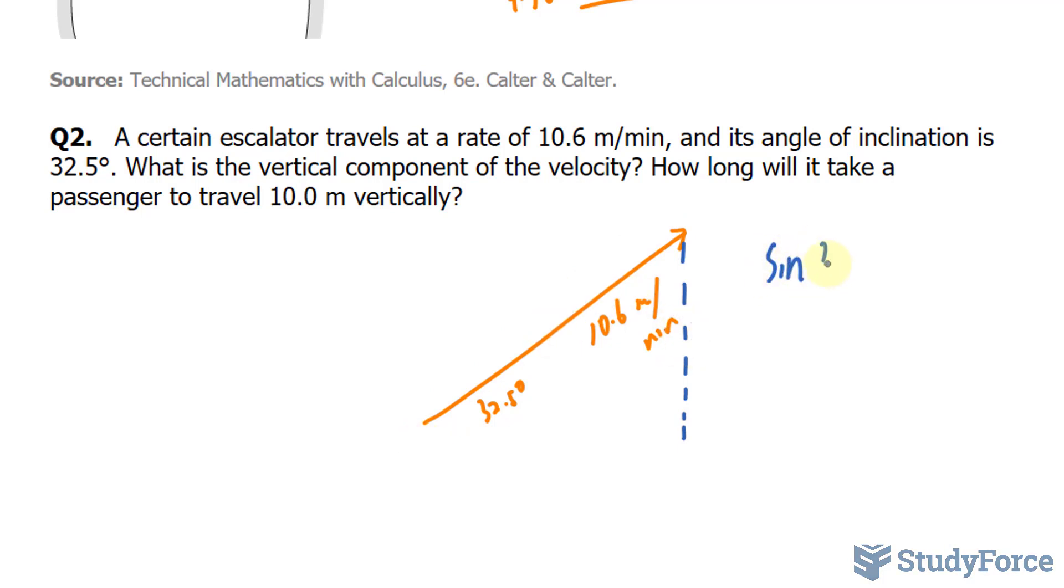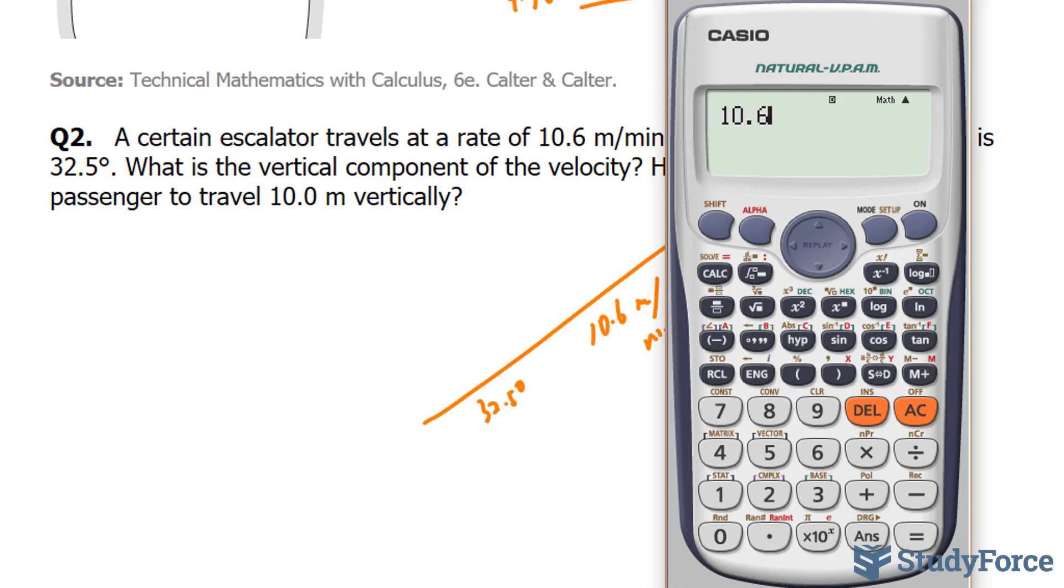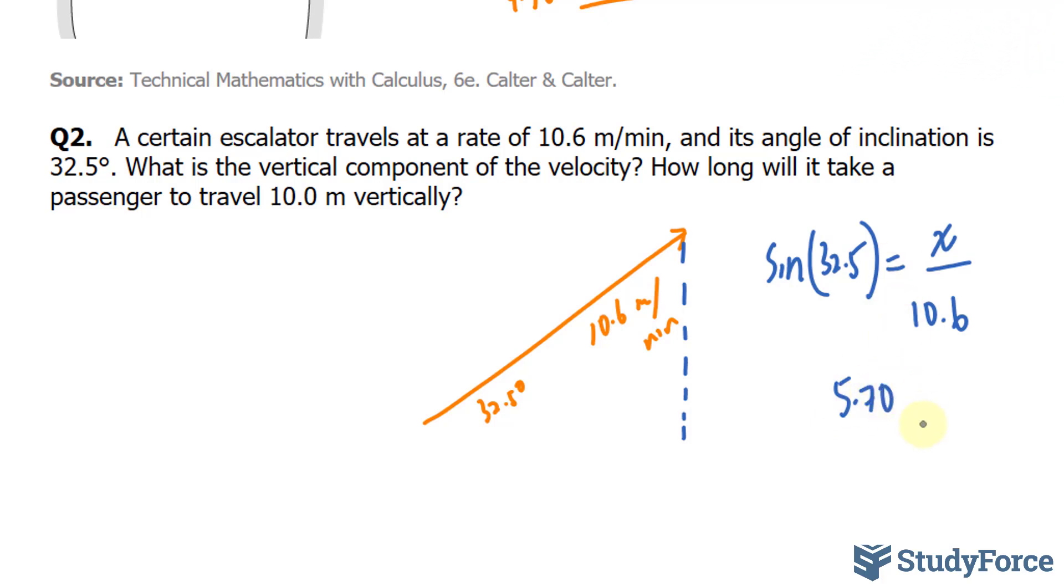So we have sine 32.5. Opposite is what we're looking for. Let's call it x. And the hypotenuse is 10.6. To find x, we multiply both sides by 10.6. So we have 10.6 times sine at 32.5. We end up with 5.695. And this 9 will go up because it's followed by a 5. 5.70 meters per minute. That is the speed vertically as one of the components.